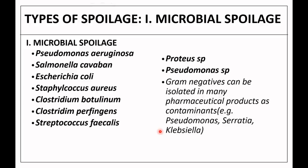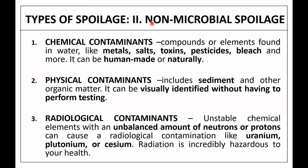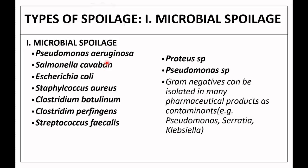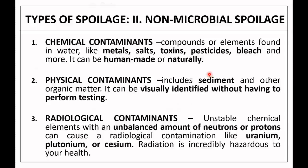What are the different classifications of spoilage? It is mainly classified into two: microbial spoilage and non-microbial spoilage. Microbial spoilage includes contaminating microorganisms like Pseudomonas, Salmonella, E. coli, Staphylococcus aureus, Clostridium botulinum, Clostridium perfringens, Streptococcus fecalis, Proteus species, and gram-negative organisms such as Pseudomonas, Serratia, and Klebsiella.